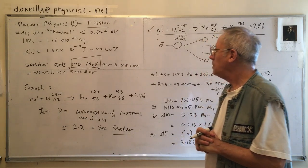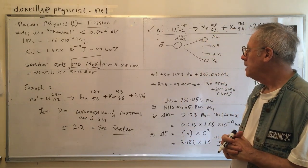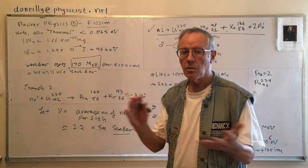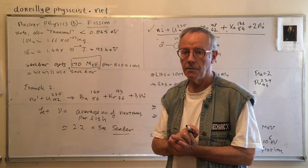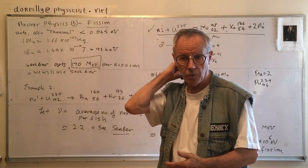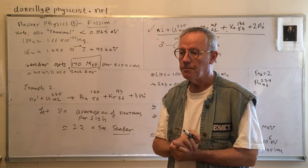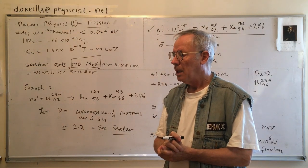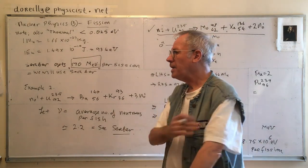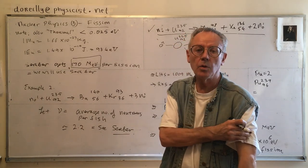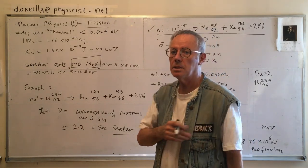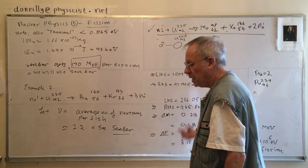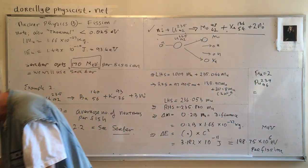Using this information, we can find the energy released from fissioning one gram of uranium-235, then one kilogram of uranium-235, and then figure out how many kilograms release energy equivalent to a given number of tons of TNT. That's the direction we're heading.